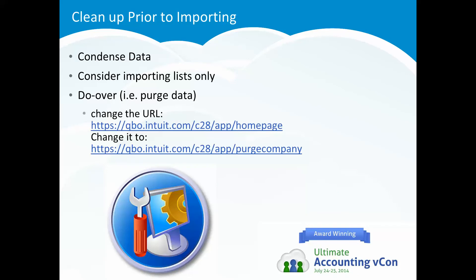Prior to importing your data, you want to go through and condense that data — you want to clean it up. If you've got 5 or 10 years worth of data in a desktop file, you don't necessarily want to upload and convert all of that to QuickBooks Online. Remember the old garbage in, garbage out? We don't want to do that. Keep the historical information available in the desktop file so you can refer to it as needed or if you're ever audited. In the U.S. version, you can use the condense feature — go to File > Utilities > Condense — and just keep about the last year or so of the data so that you're not uploading everything.